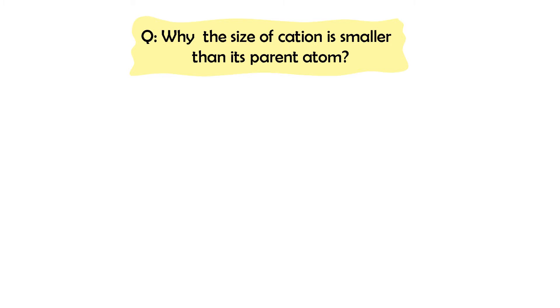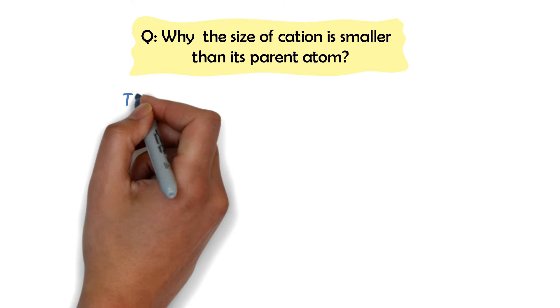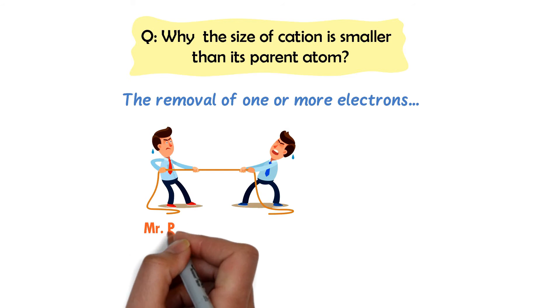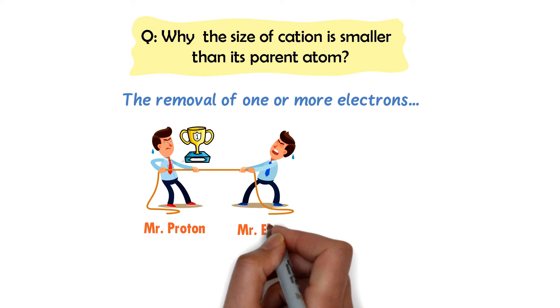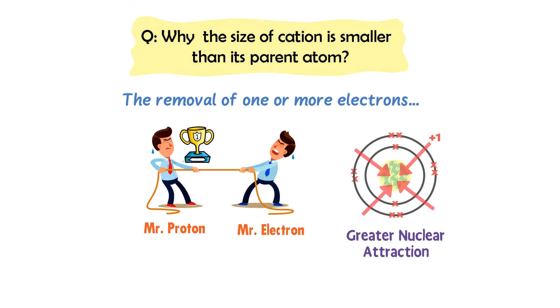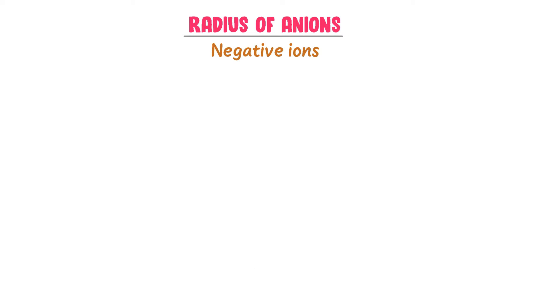Here is a bonus conceptual question: Why is the size of a cation always smaller than its parent atom? It is because the removal of one or more electrons from a neutral atom causes the loss of a shell. Secondly, the proton count dominates the number of electrons, and the greater nuclear attraction pulls the electrons towards the nucleus. Now let me teach you the concept of radius of anions, or negative ions.